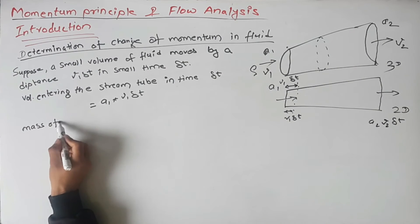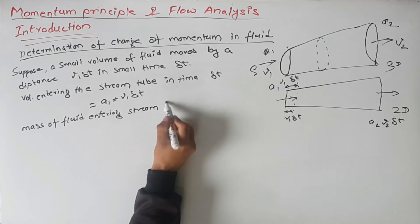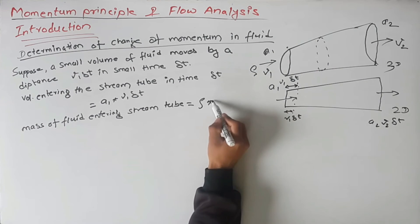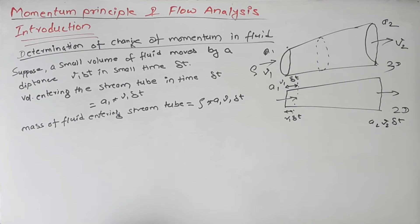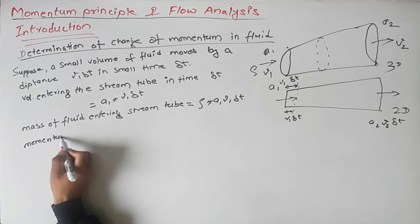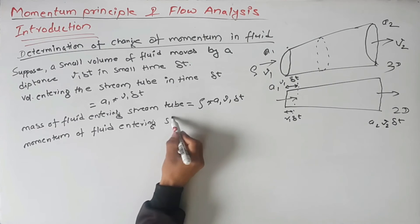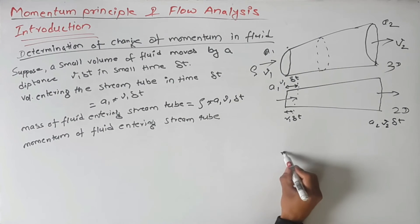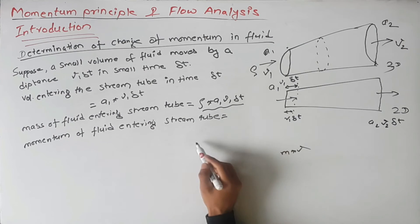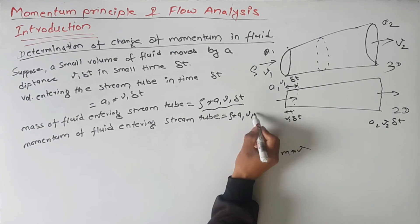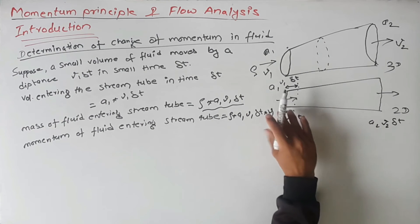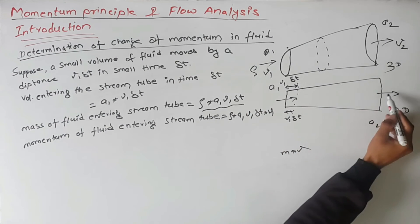We have the volume, so we can find the mass entering. Mass = density × volume = rho × A1 × V1 × delta-t. From the mass, we can find the momentum of fluid entering the stream tube. Momentum = mass × velocity = rho × A1 × V1 × delta-t × V1. Similarly, we can find the momentum of fluid exiting the stream tube.